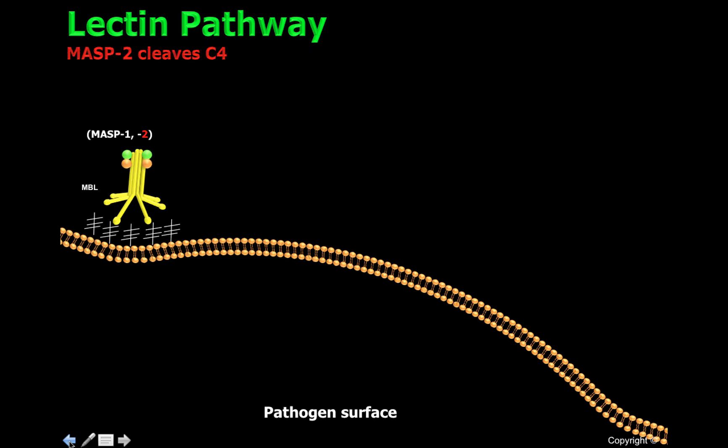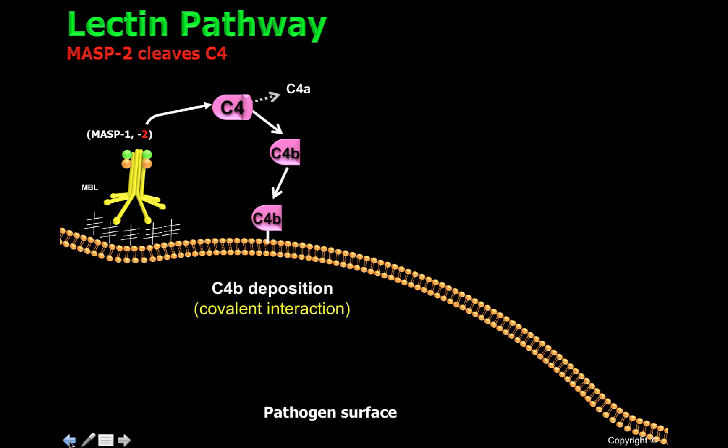MASP2 has the capacity to clip C4, forming C4A and C4B. If C4B is close enough to the cell surface of the pathogen, it will covalently attach to the cell surface. This is what we call C4B deposition.